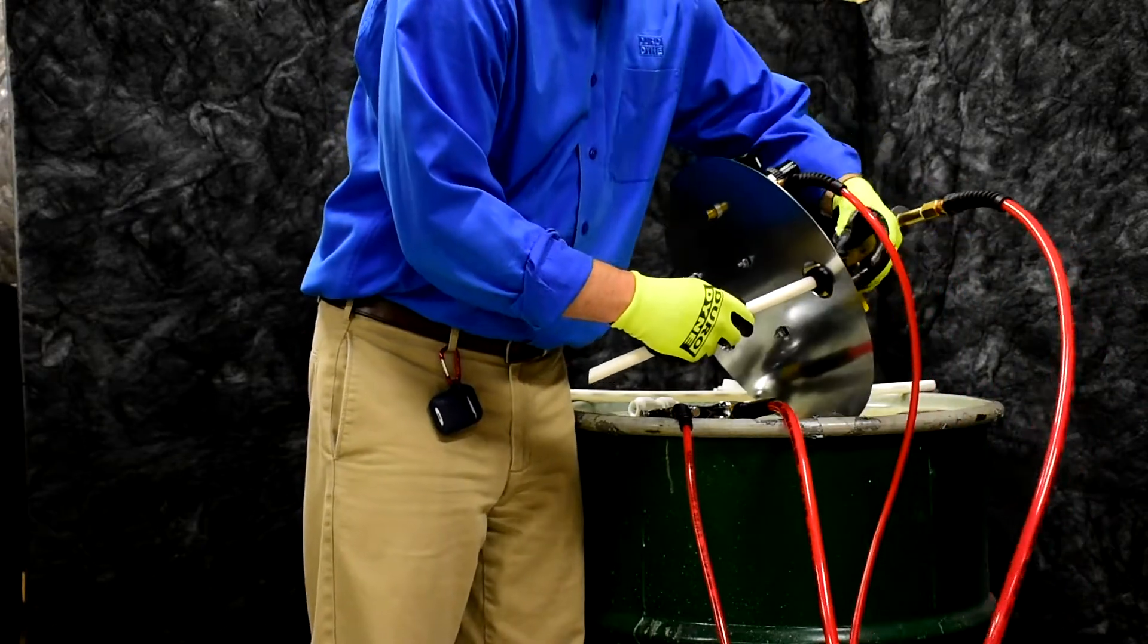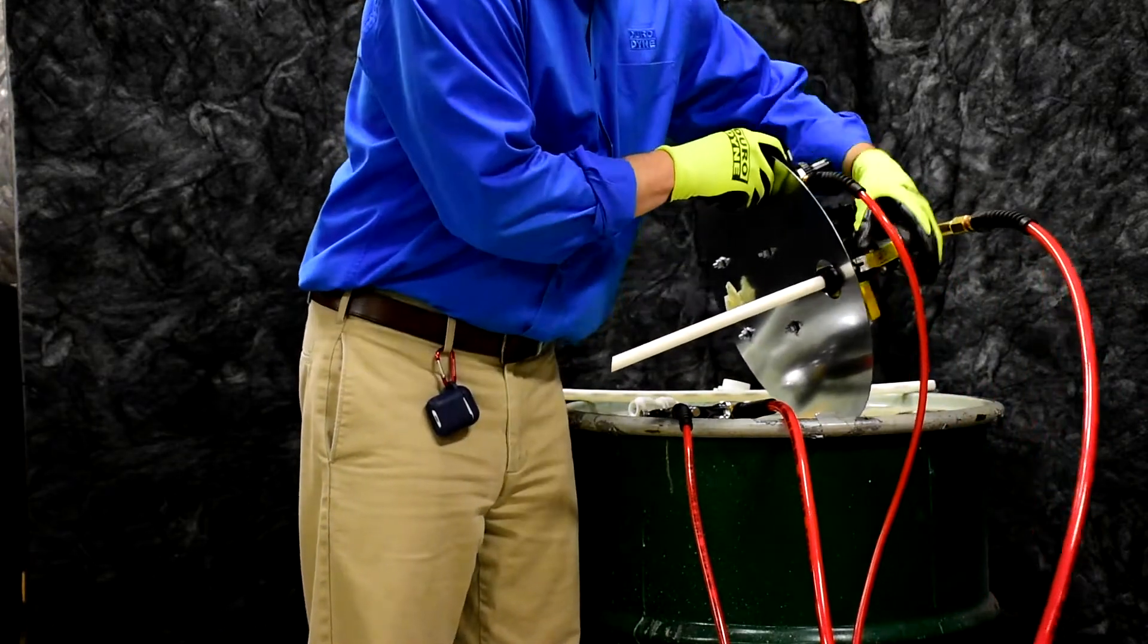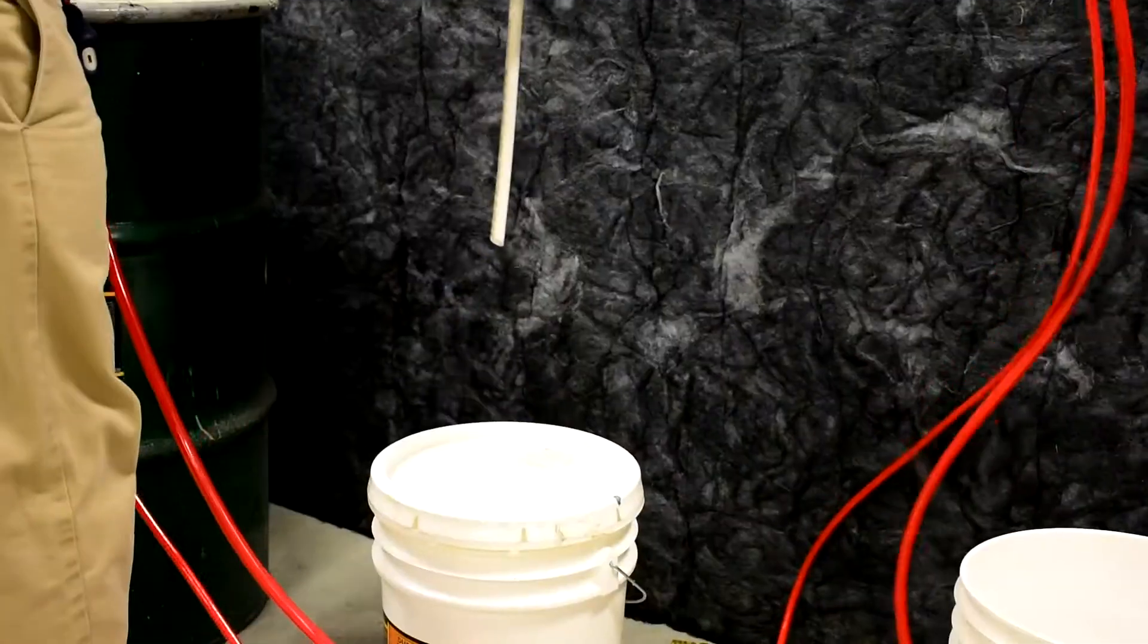Simply insert the pickup tube into the drum or bucket and leave the Super Sprayfast sitting on top.